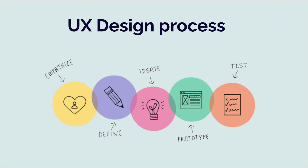The next two stages in the UX process are Define and Ideate. This is where the UX designer will firstly determine what concrete issue they will be resolving for the user, and then come up with ideas for potential solutions — deciding which ones to carry forward into design and development. The 4th stage is where it becomes really interesting, because now, taking into account all of the knowledge from the previous steps, UX designers can finally start making their ideas and solutions come to life. In this stage, they will design wireframes, mockups, and prototypes.